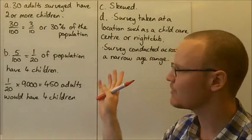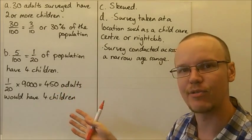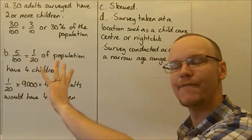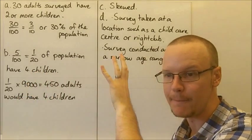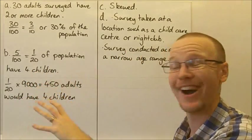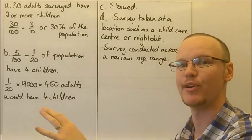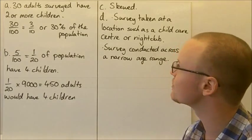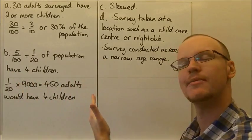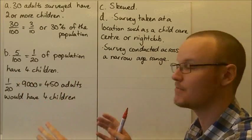So C skewed, if you have a look back to the graph, you can see that it's pushed very far over to the zero children section. Half of the people said they had zero children, and the rest had some children. So it was very skewed, it wasn't right, sort of symmetrical about the middle.